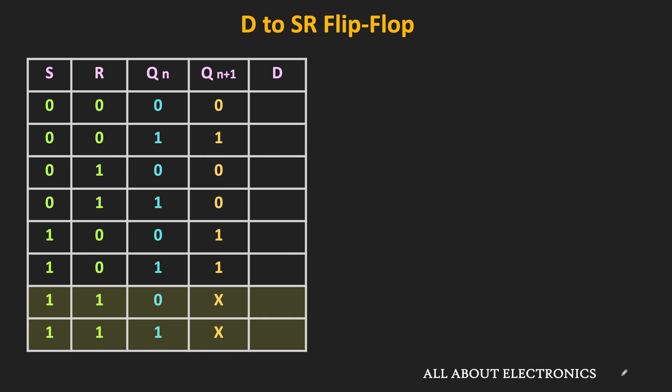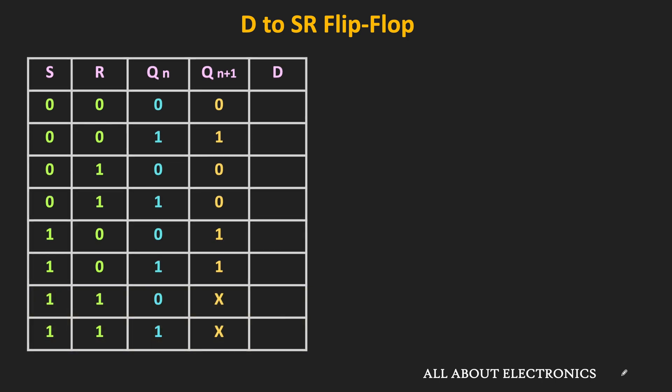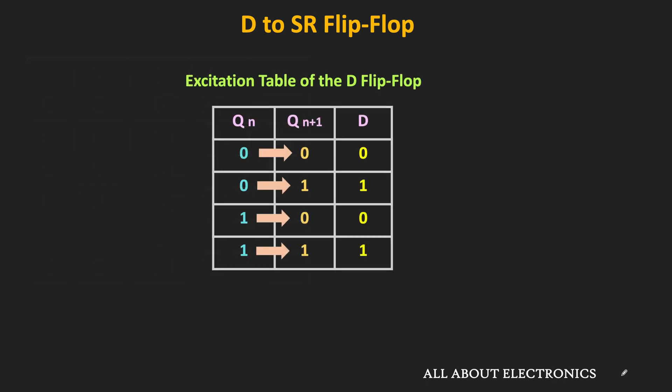For the last two conditions, it doesn't matter what is the value of the D input, and therefore this D input is the don't care term. But apart from that, to find all these output transitions, let us see what should be the value of the D input. For that, we will take the help of the excitation table of the D flip-flop.